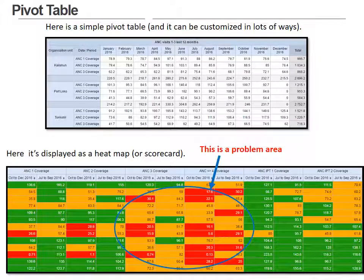The first are pivot tables. Here we have two examples of pivot tables directly out of DHIS2. The first one is pretty standard and quite complex, and they can be as complex as you need.